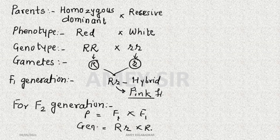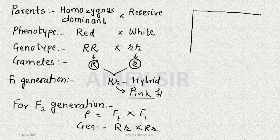In Mendelian inheritance, the dominant allele completely suppresses the expression of the recessive gene. But here, the dominant gene fails to suppress recessive gene expression. Even in the presence of the dominant allele, the recessive gene expresses itself partially. This is why F1 generation plants have pink flowers. For F2 generation, F1 will be the parents. We perform selfing — capital R, small r crossed with capital R, small r — a monohybrid cross.